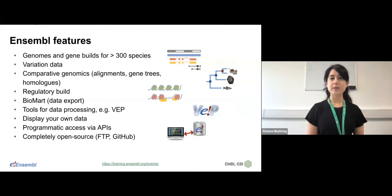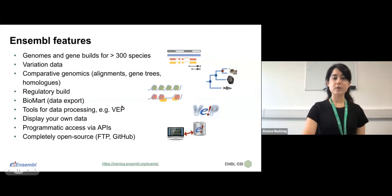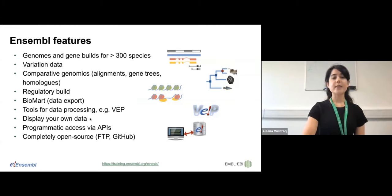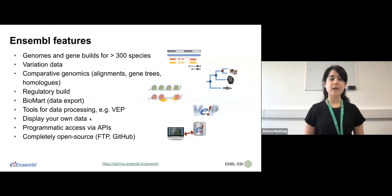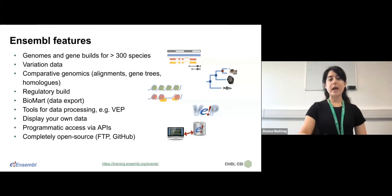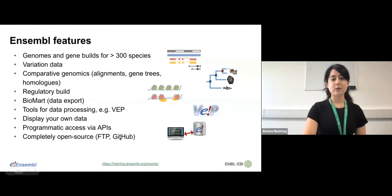You can export data tables from Ensembl using BioMart. You can also use VEP — the Variant Effect Predictor — to annotate your own variants. You also have the option to display your own data in Ensembl, and you have programmatic access to our data via our APIs. Most importantly, Ensembl is completely free — it's open source, and we provide access to whole genome files via our FTP site and GitHub.